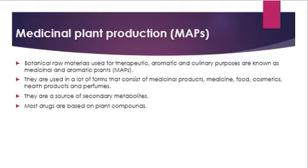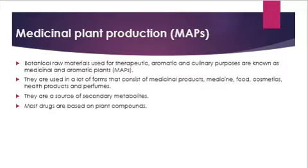Secondary metabolites and primary metabolites are basic food — we need energy. Secondary metabolites support the immune system; we need some enzymes to support the primary metabolites, to support chemical secretion. So we need secondary metabolites to supply medicinal and aromatic plants.